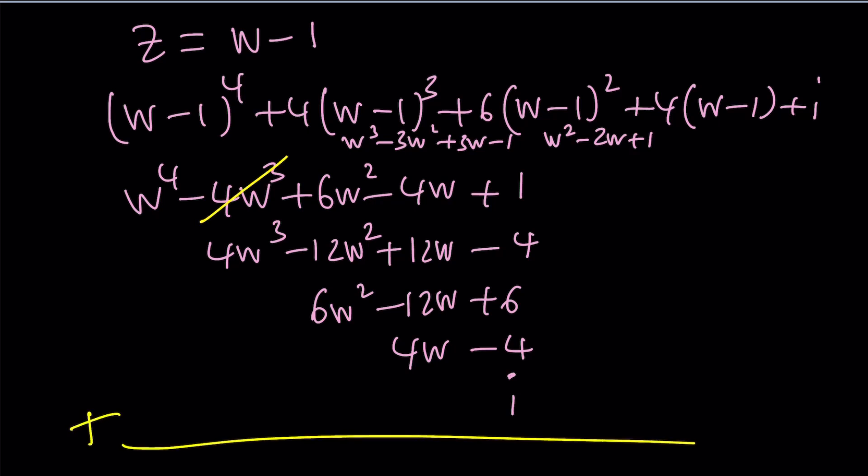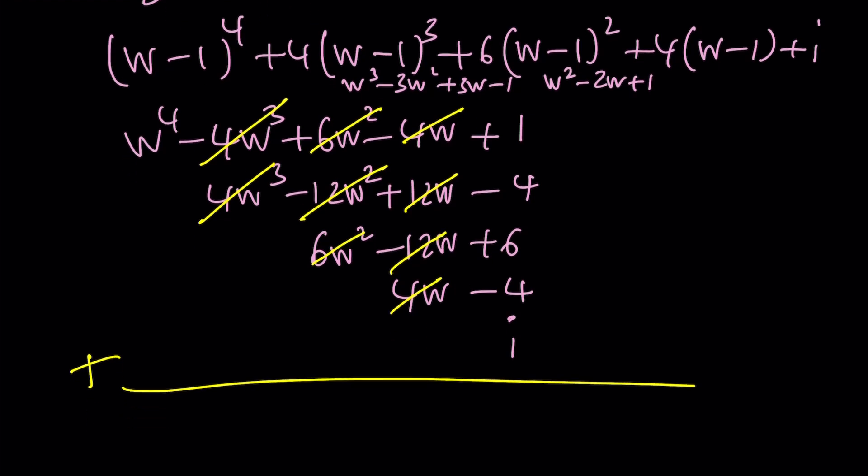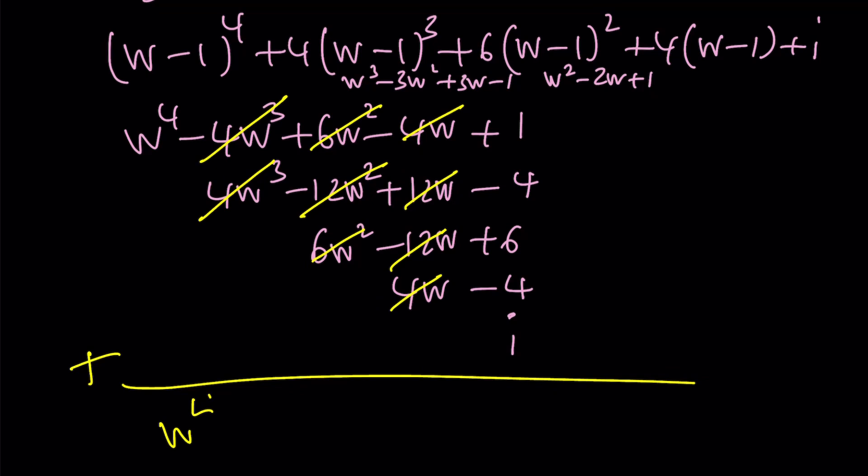These two are going to cancel out. 6W squared plus 6W squared is 12W squared, so this is going to cancel out. 4W cancels out. 12W cancels out. 1 plus 6 is 7, and 7 minus 8, that's going to give us a minus 1. That didn't cancel out. So we're going to get something like this: W to the 4th and then this is going to be minus 1 plus I. And what is that supposed to equal? 0. Awesome.